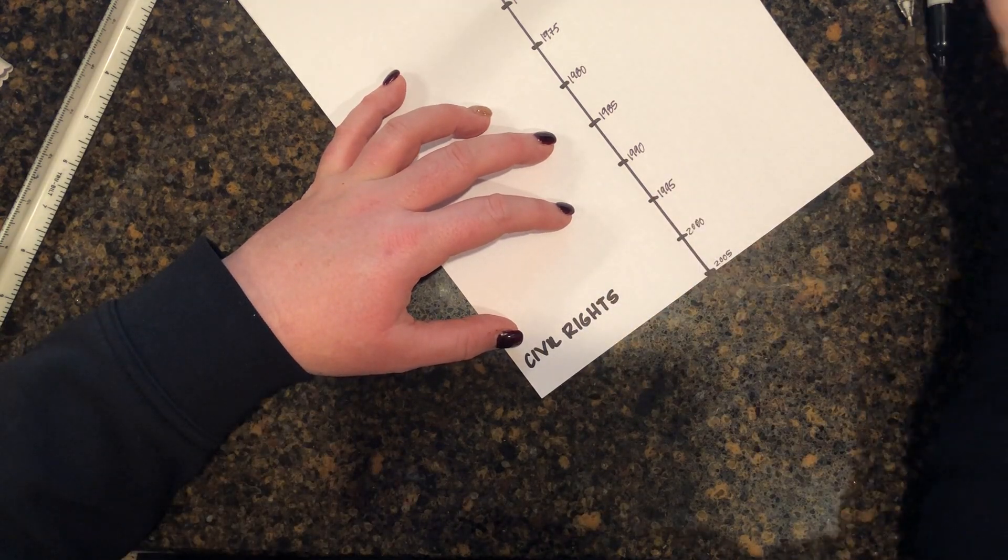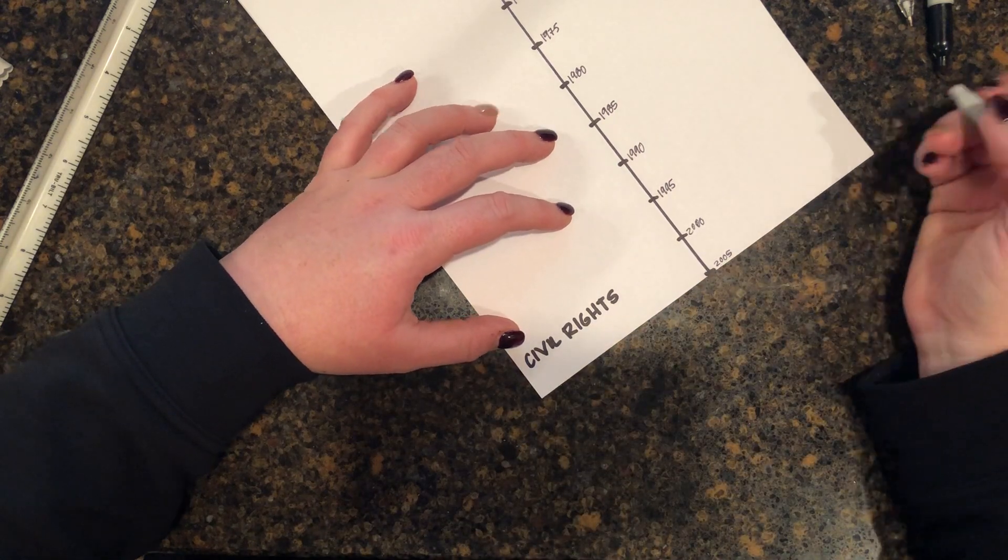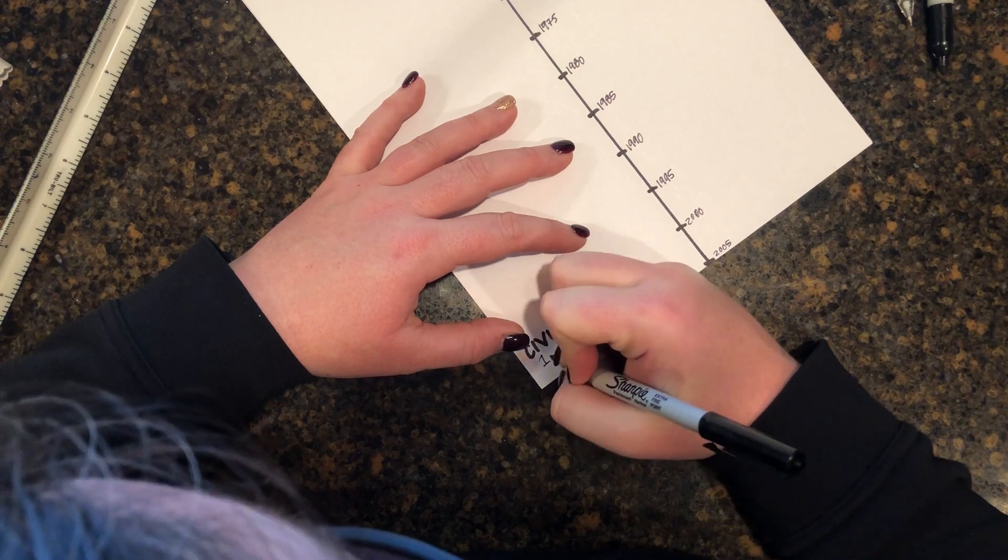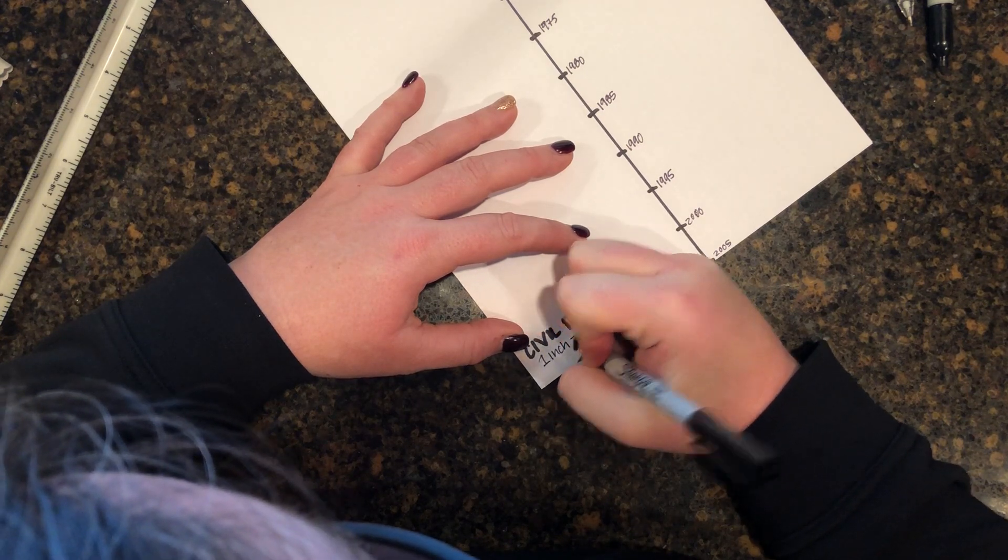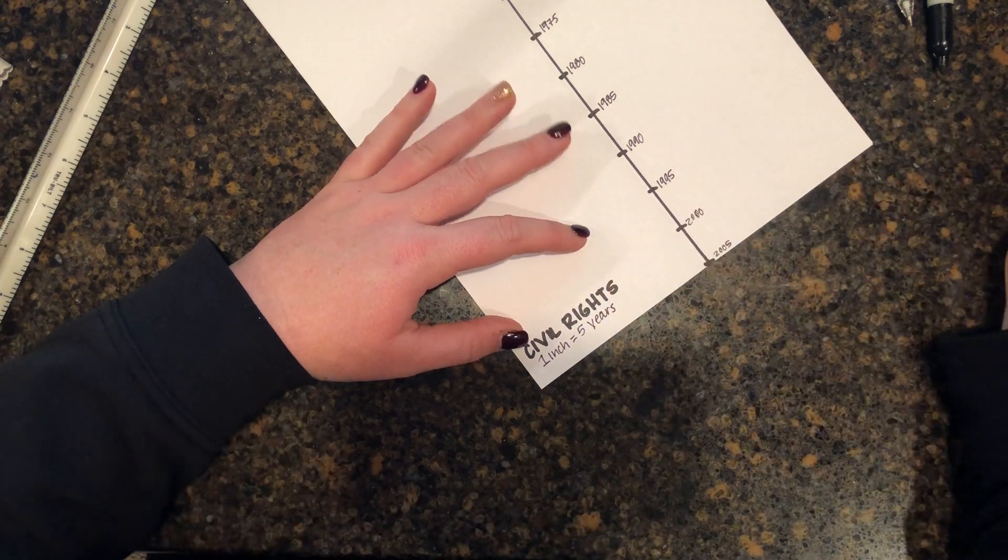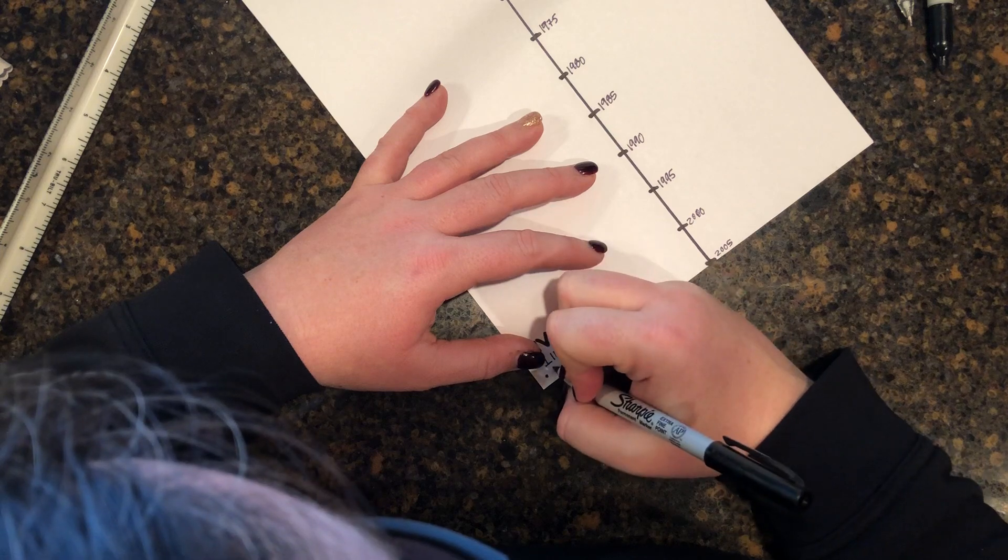All right, I like it, that looks good. I'm gonna come in and I'm going to include my key, so I'm gonna let my reader know what my interval is. I'm gonna say one inch equals five years. And now I'm gonna want to make sure that I write my name so that I know who this is.